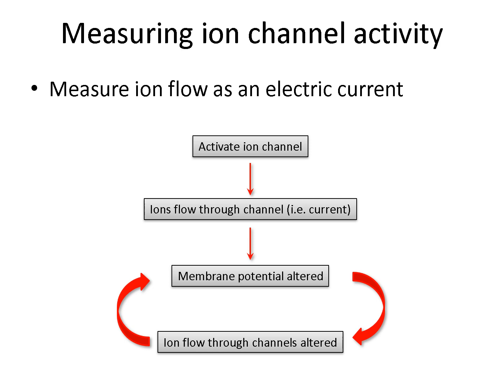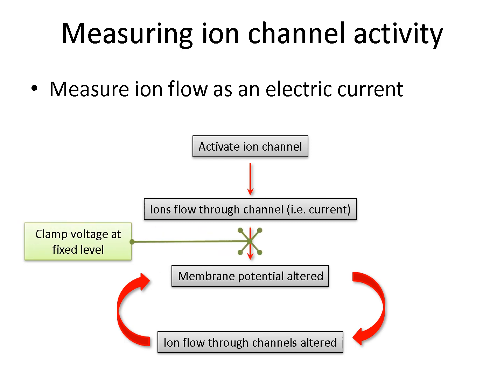That is where voltage clamp comes in. If you force the membrane potential to stay at a fixed level, it cannot change when ion channels are activated. So the current flow that is measured in these conditions is due entirely to the channels of interest. In this way, you can directly measure the flow of ions through a channel, free from the complications associated with a changing membrane potential.